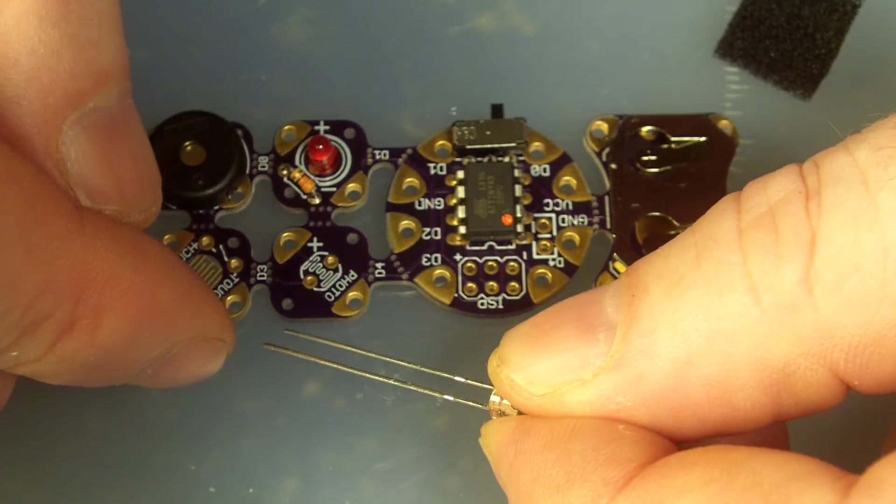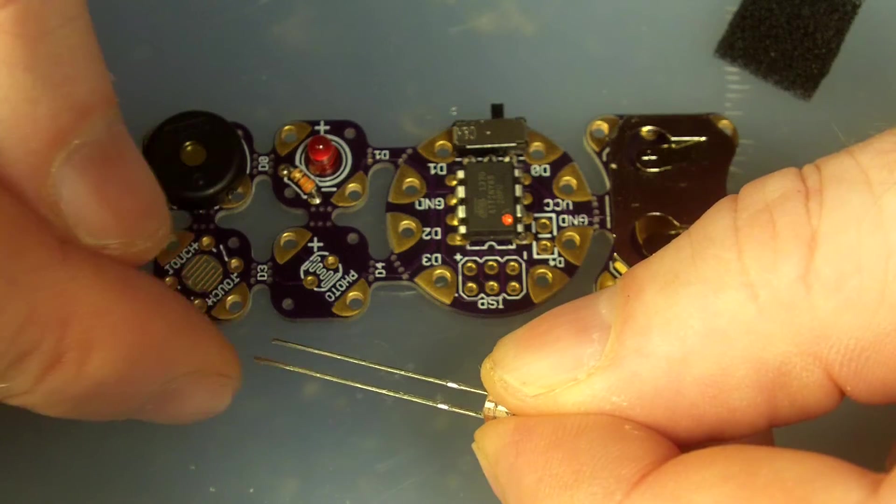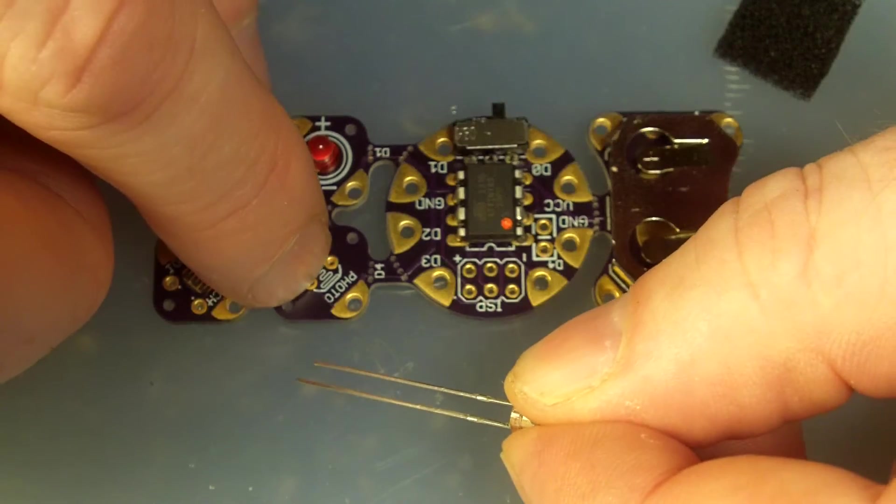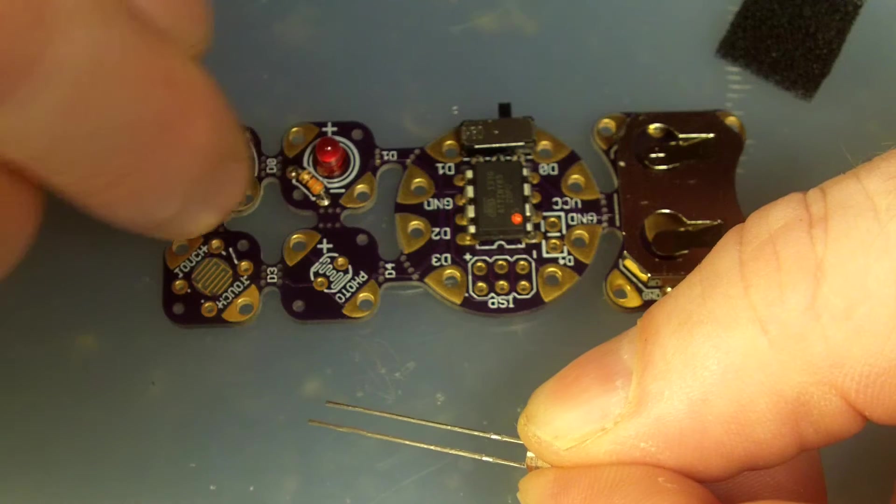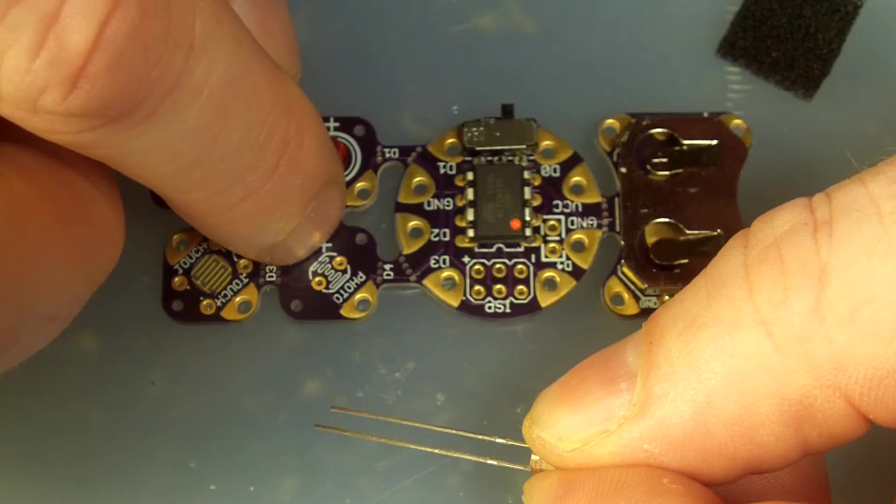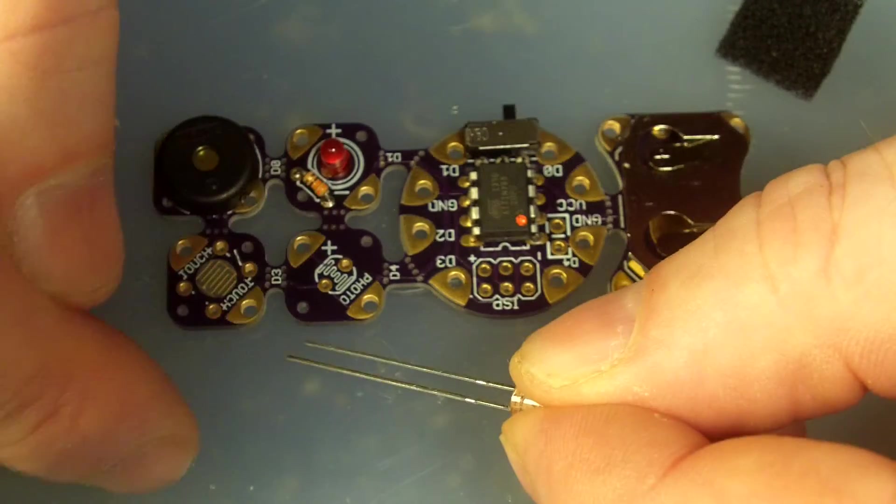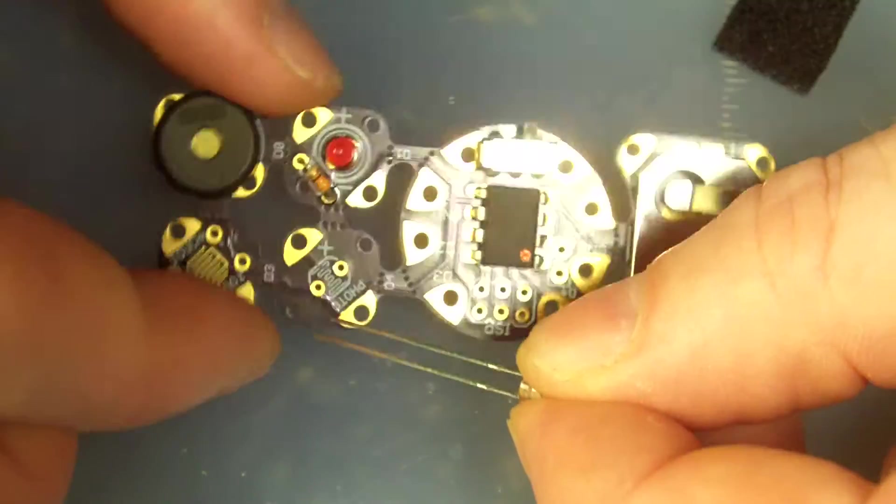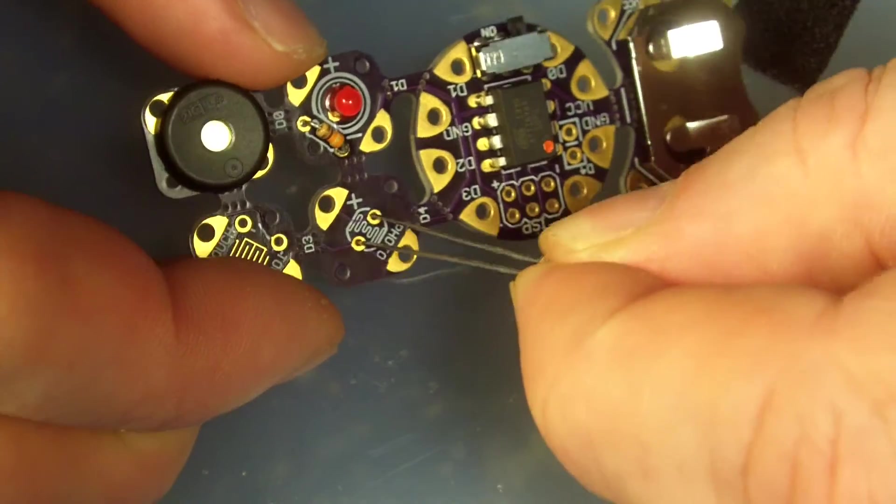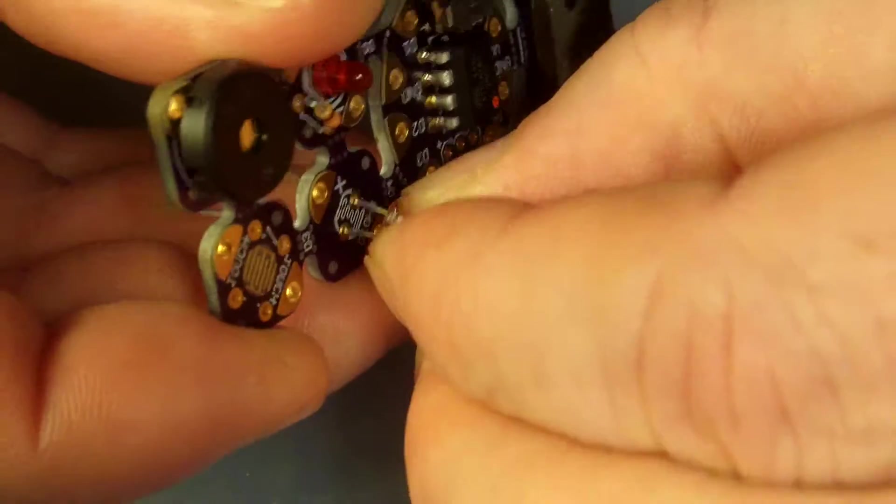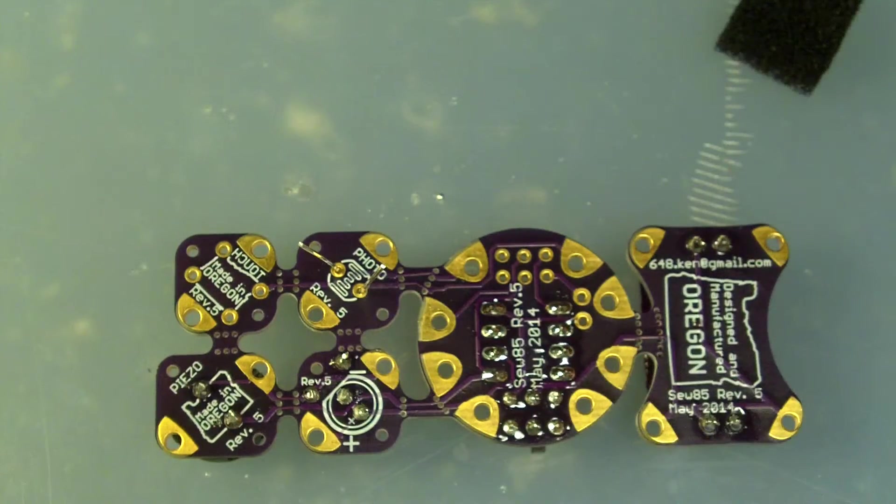The emitter on this package, you can look at the datasheet if you need help, is the long one. I think of that normally as negative, so that one's going to go to the lead farthest away from the board. We're going to have to remember that too when we sew. I do have plus marked on here so we'll know which one to solder or sew into. For now we just need to know that the long lead goes into the one farthest away from the hole.